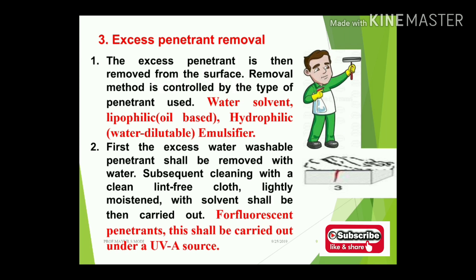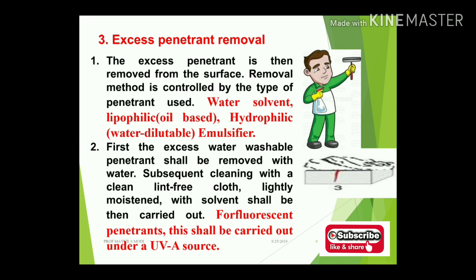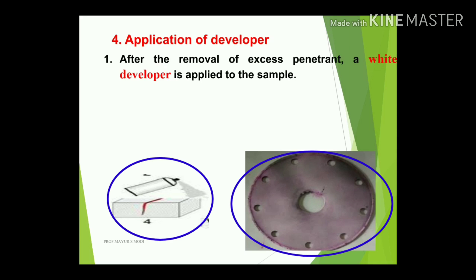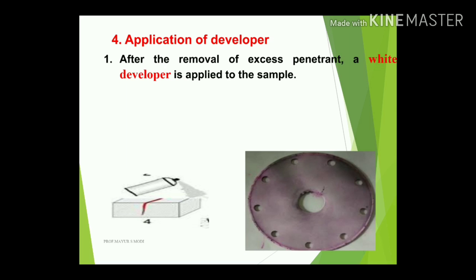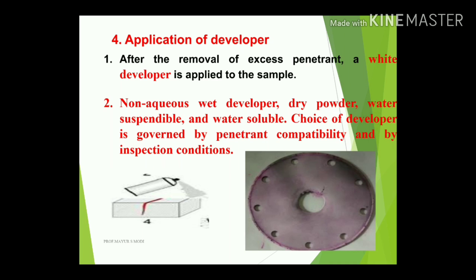Excess water-washable penetrant shall be removed with water, followed by cleaning with a clean lint-free cloth lightly moistened with solvent. Fluorescent penetrant examination is carried out under an ultraviolet source. The fourth step is application of the developer — a white developer is applied to the sample. Developer types include non-aqueous wet developer, dry powder, water-suspendable, and water-soluble. After 15 to 20 minutes of developer application, proceed to inspection.